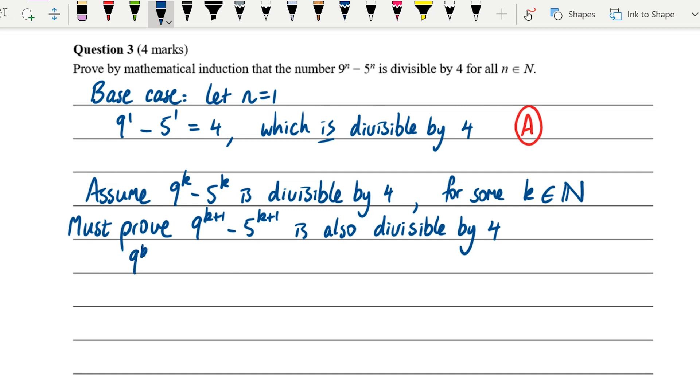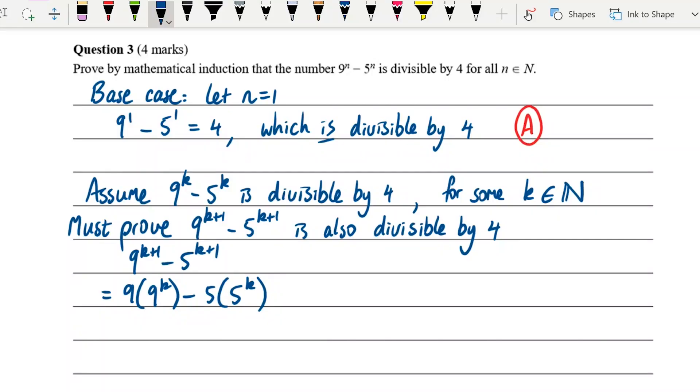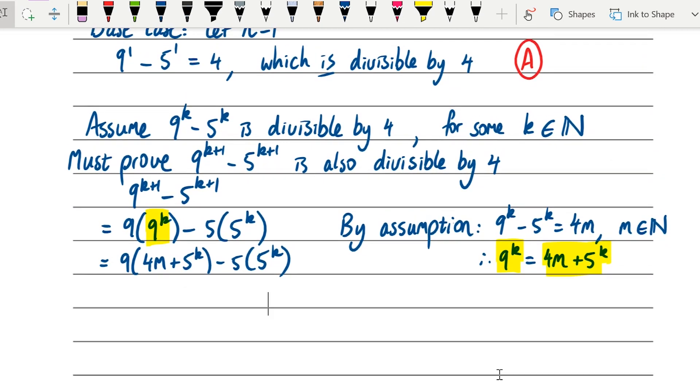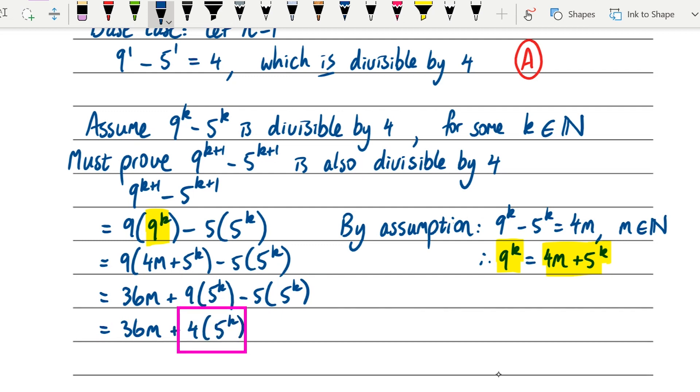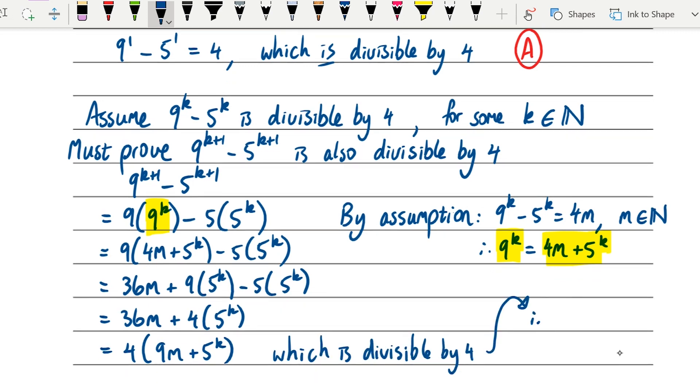Again, we need to use our assumption somehow. I'm going to start by breaking 9 to the k plus one into 9 to the k times 9 to the one—that's 9 times 9 to the power of k—and the same thing for 5 to the k plus one. I want to make a substitution. Let's rewrite our assumption: 9 to the k minus 5 to the k is 4 times something, because it's divisible by 4, so it's 4 times some integer, let's call that m. What that means is I can do a substitution for 9 to the k: it's going to be 4m plus 5 to the k. When I sub that in, hopefully what I will get—I want to show that what I get is a multiple of 4. I can expand this bracket and group these terms, 9 times 5 to the k minus 5 times 5 to the k into 4 times 5 to the k. Luckily, what we notice is everything here is divisible by 4. This is 4 times some integer and we're happy. So that completes the proof by induction.